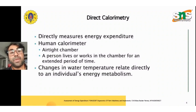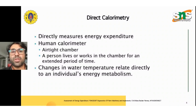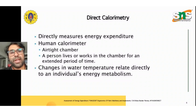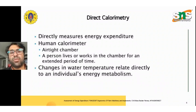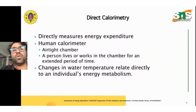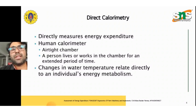Direct calorimetry directly measures energy expenditure using a human calorimeter. It uses an airtight chamber in which a person lives or works for an extended period of time. Changes in water temperature relate directly to an individual's energy metabolism. This directly measured form of energy expenditure is called direct calorimetry.